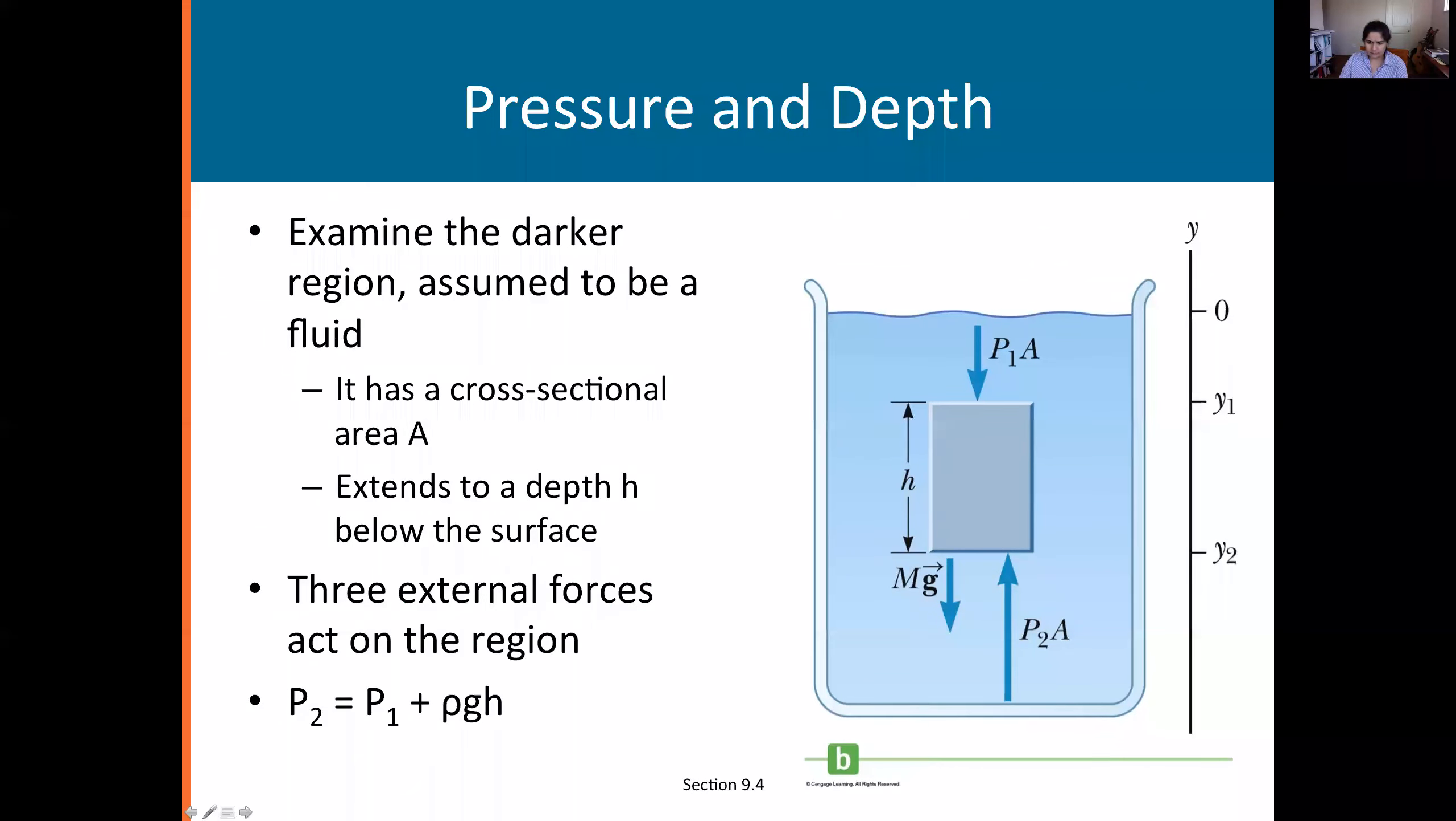...ρgh, where I have replaced m using its relationship with density. We know ρ equals mass per unit volume, so mass can always be replaced by ρ times V. The volume is the cross-sectional area A times the height h.